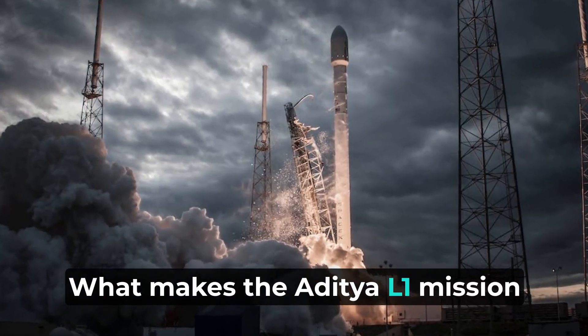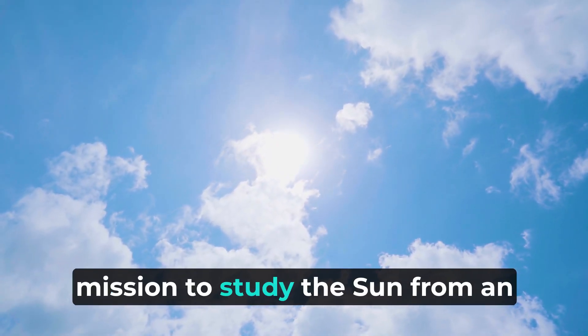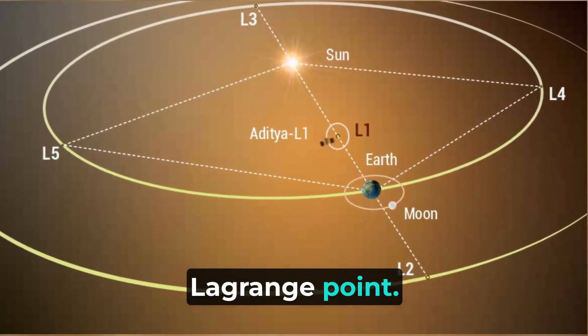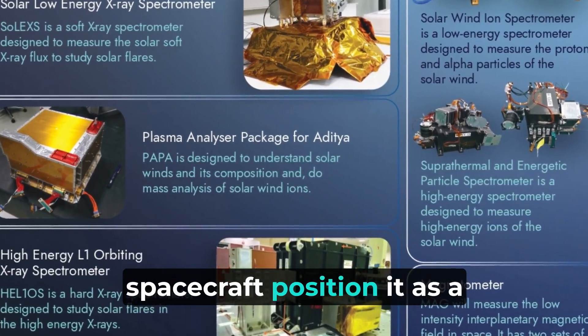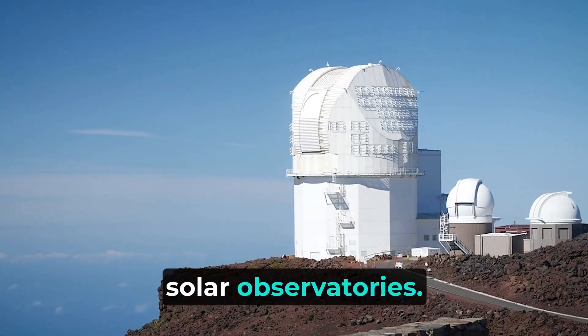What makes the Aditya L1 mission truly historic is the fact that it will be the first Indian mission to study the sun from an orbit around the L1 Lagrange point. The unique features of this spacecraft position it as a valuable addition to the international fleet of solar observatories.